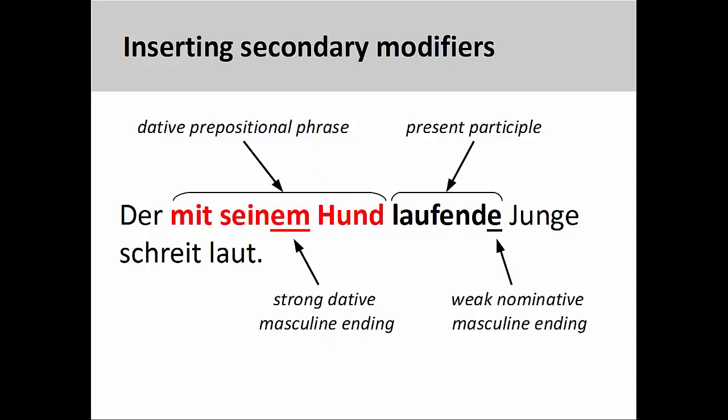Now that we have inserted the present participle and applied the correct adjective endings, let's bring over the remaining secondary modifiers. The dative prepositional phrase, mit seinem Hund, with his dog, is an adverbial modifier describing the manner in which the boy runs. We will need to place this directly before the present participle. It is very important to note that the strong adjective ending in the dative prepositional phrase remains the same, even though the entire extended modifier is used to describe a masculine noun in the nominative case, Junge.